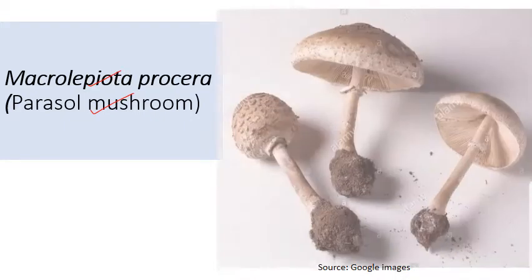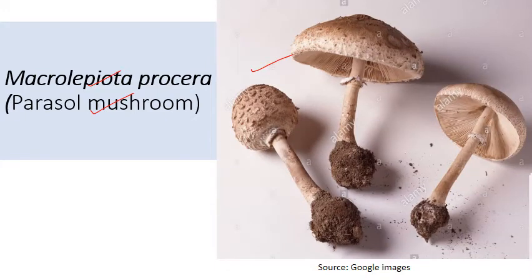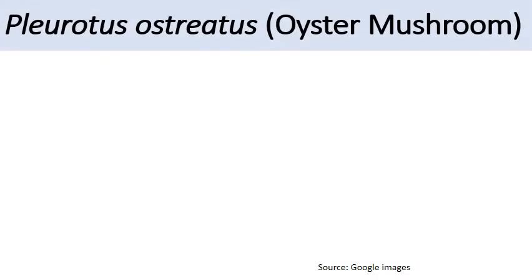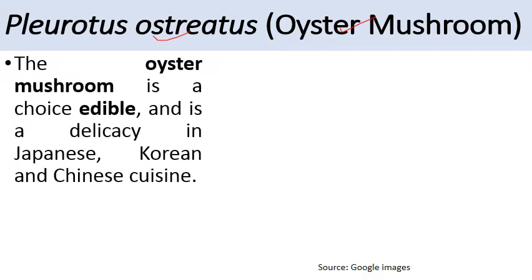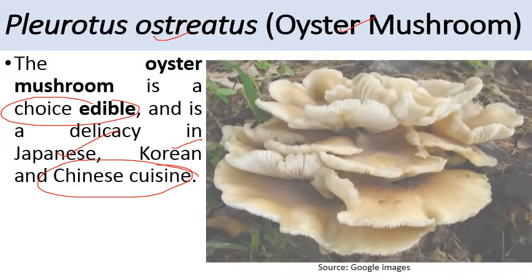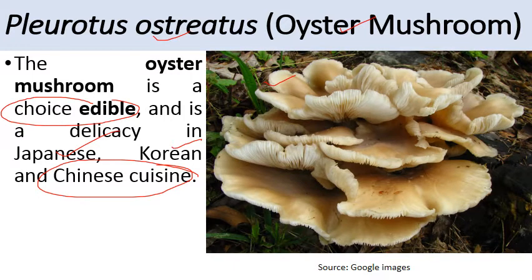The next edible mushroom is Macrolepiota procera, commonly known as Parasol mushroom — it is also edible. The next is Pleurotus ostreatus, commonly known as Oyster mushroom. The Oyster mushroom is a choice edible and is a delicacy in Japanese, Korean, and Chinese cuisine. It forms a very important part of these delicacies and is also rich in nutrients.